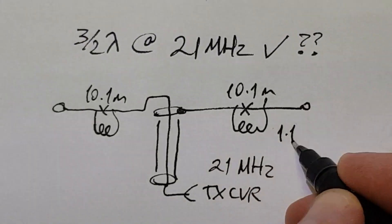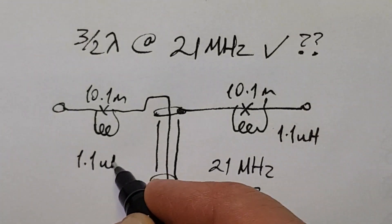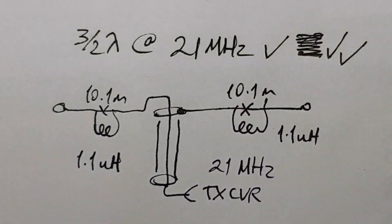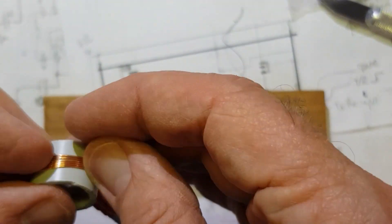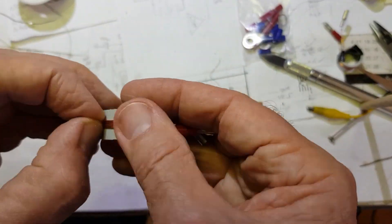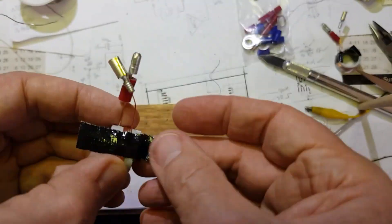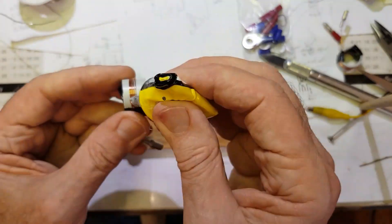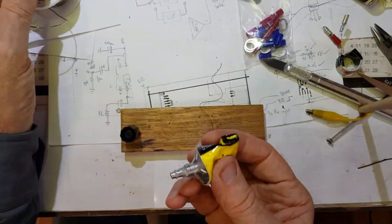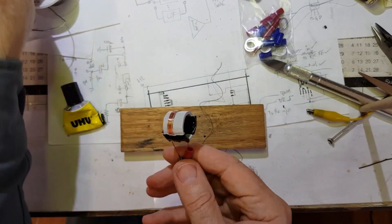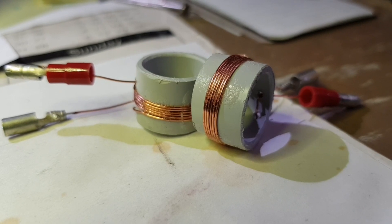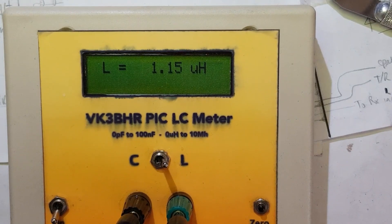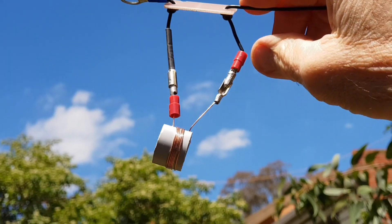So I made up two 1.1 microhenry inductors, around about 11 turns, wound on to 20 millimeter PVC tubing sections. I added the same bullet connectors. Checking them on the LC meter. Now it's just a matter of inserting them at the link.